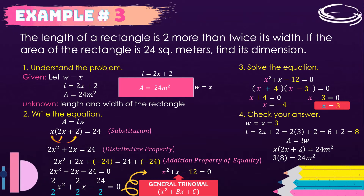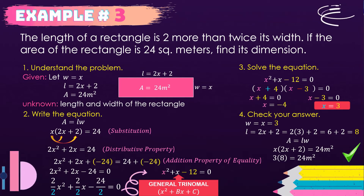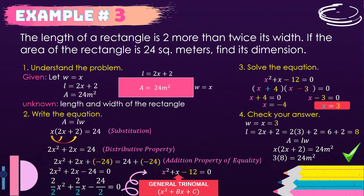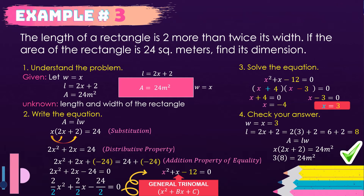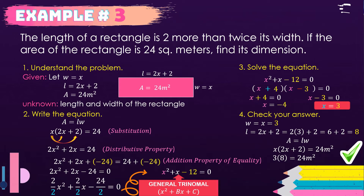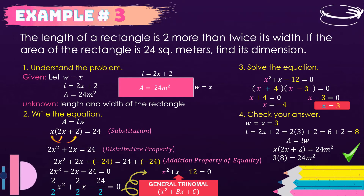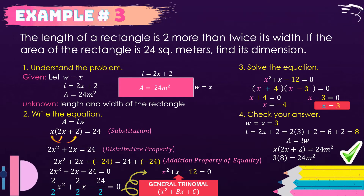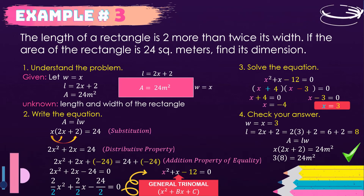To check: the width equals x = 3, and the length equals 2x + 2 = 2(3) + 2 = 8. The area is length times width: 3 × 8 = 24 square meters. We got it correct.